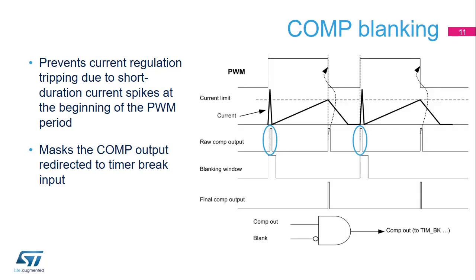The comparator can be used in the cycle-by-cycle regulation loop for monitoring the peak value of the current flowing into the load. The purpose of the blanking function is to prevent incorrect current regulation tripping due to short-duration current spikes at the beginning of the PWM period. Short current spikes caused by activating power switches can produce false pulses on the comparator output, marked by the blue color on the diagram. These pulses need to be masked by a blanking window to avoid false fault detection. The blanking window waveform can be generated by one of the timer output channels.